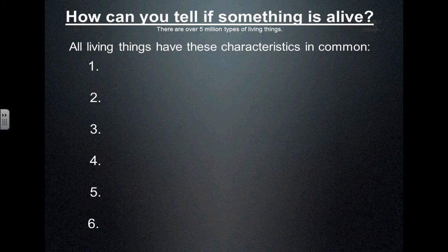Let's go over it in our notes. We have what we call six main characteristics of life. All living things have these characteristics that we're about to list. For right now we're just going to list them, then we'll talk about them one by one and explain them a little further. But one that nobody mentioned at first is a very important one: all living things are made of cells.